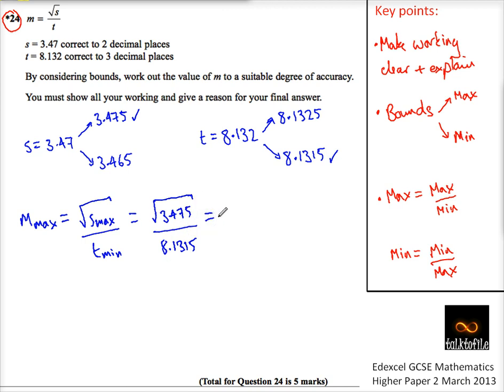Let me tap that on my calculator, using the fraction button. 3.475, divided by, square root of that, divided by 8.1315. And I get the answer: 0.2292486243.